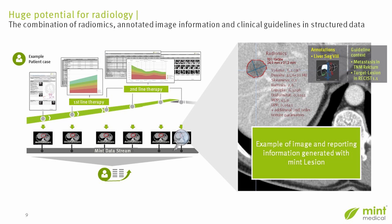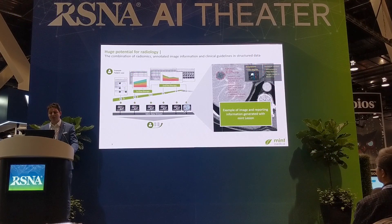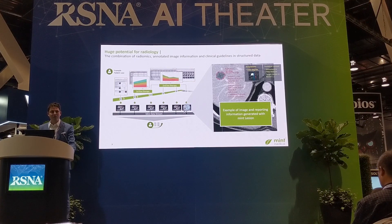Focusing on a single lesion highlighted here shows the huge potential for radiology. We combine three dimensions: image-based information like size, volume, density, and radiomics parameters; additional annotations from the template such as liver segment 8; and the guideline context — that this liver lesion was a metastasis in TNM rectal staging and is now a target lesion in RECIST 1.1. You generate real-world evidence from your clinical routine data that you can use for cancer research.